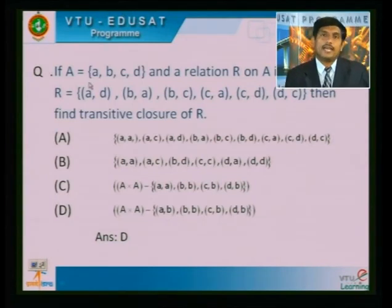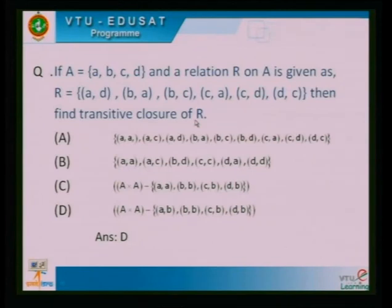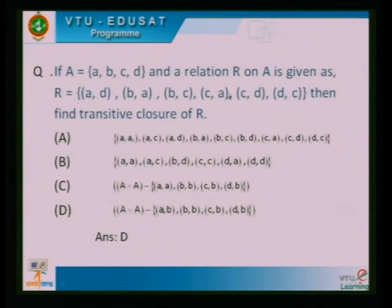Next, if A = {a, b, c, d} and the relation R on A is R = {(a,d), (b,a), (b,c), (c,a), (c,d), (d,c)}, find the transitive closure of R. You compute R composed with R, identifying what is missing from A × A. Pairs like (a,b), (b,b), (c,d), (d,b), etc. are missing. After computing the transitive closure, the solution contains the pairs (a,b), (b,b), (d,b).